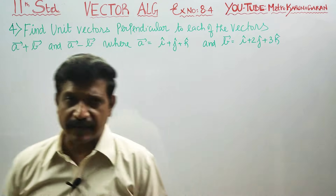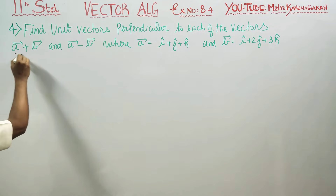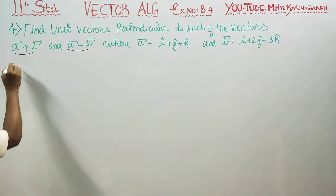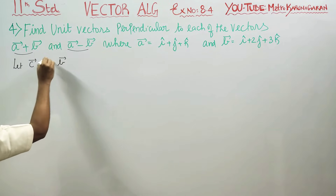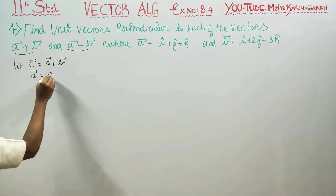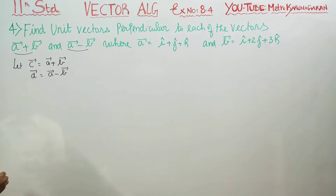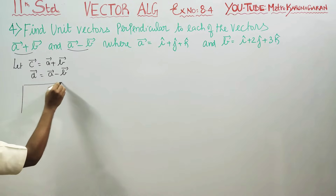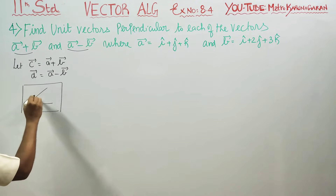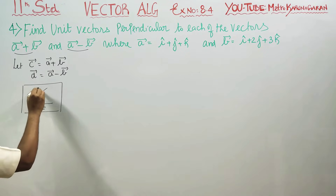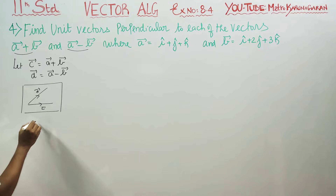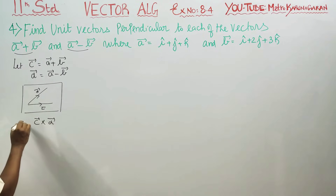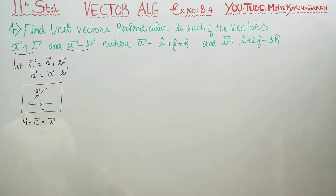Find the unit vector perpendicular to these two vectors. Let c vector be equal to a plus b, and let d vector be equal to a vector minus b vector. These two vectors c and d lie in a plane, and we need the unit vector perpendicular to that plane. To find it, we compute c cross d, which gives us a perpendicular vector n.